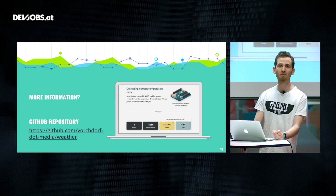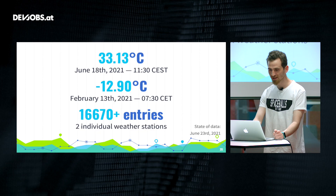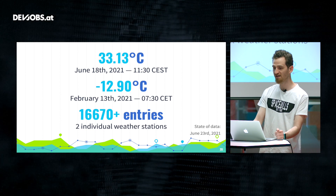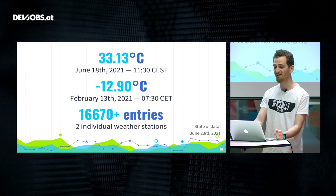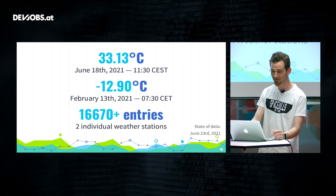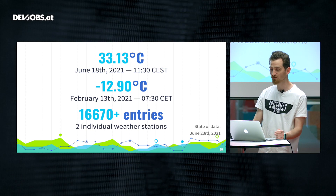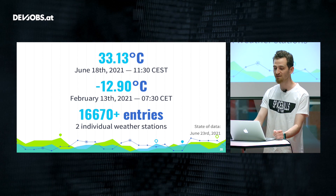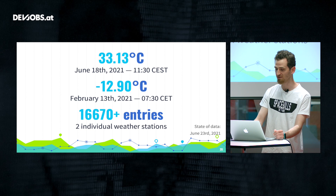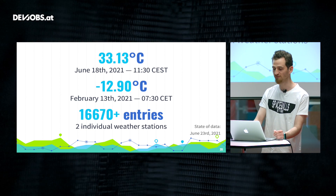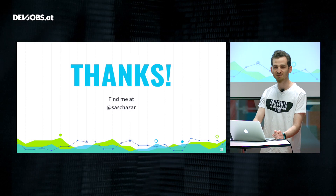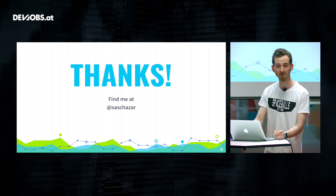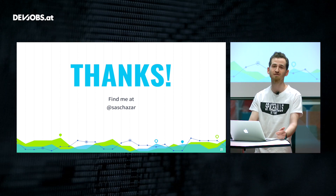To give a short overview of what's been recorded so far this year: the weather station has been online since somewhere between Christmas and New Year. The highest temperature recorded as of last week was 33 degrees on June 18th, the lowest was minus 12.9 degrees on February 13th, and so far more than 16,600 entries have been uploaded to the database from two individual weather stations. The source code is available online, and if you need further help, shoot me a question on Twitter. Thanks!